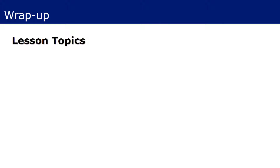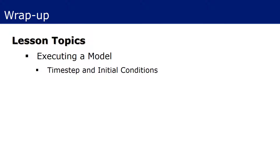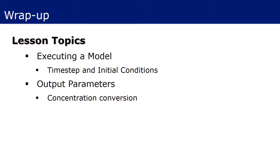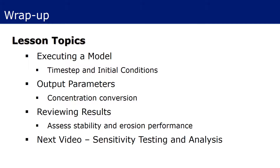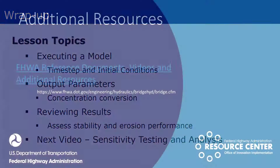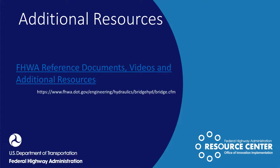This concludes the video on executing and reviewing a sediment transport model. The topics covered included the steps involved in executing a model, including guidelines for time step and initial conditions; an introduction to the new output parameters generated during a sediment run, including a discussion of converting concentrations to tons per day; and an initial approach to reviewing the results, including how to ensure the model completed without instabilities or overly constrained erosion limits, and assessing whether or not a steady solution was achieved. In the next video, we will cover sensitivity testing and other analysis approaches. For more information on additional videos, documents, and other reference material about two-dimensional modeling in SMS, please navigate to the link provided here.